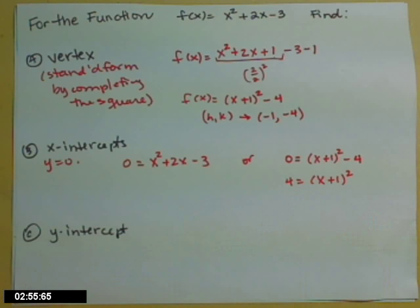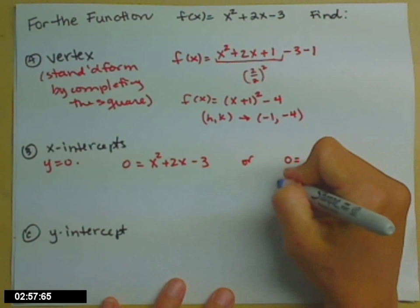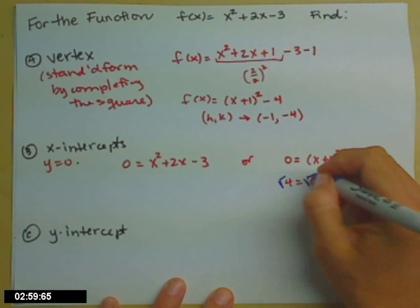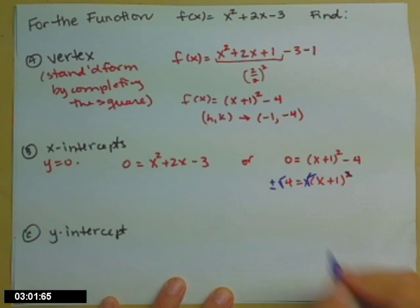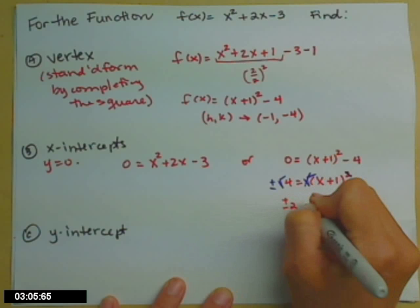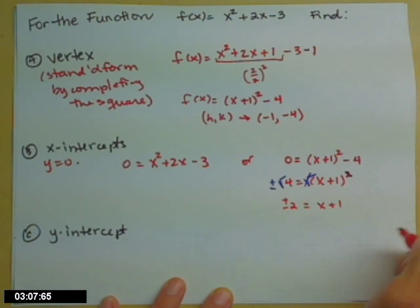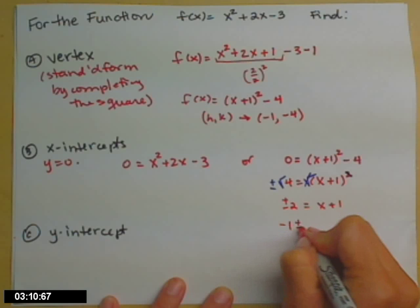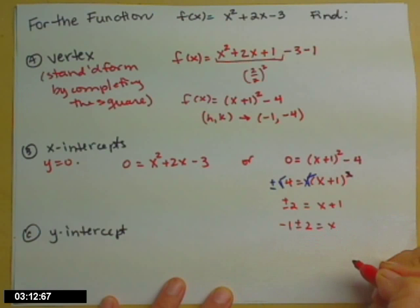Both ways get the same answer. Make sure you get that, though. Then square root both sides to make that square go away. Remember your plus minus when you square root. So now we have plus or minus 2 equals x plus 1. Move the 1 across. Negative 1 plus or minus 2 equals x.